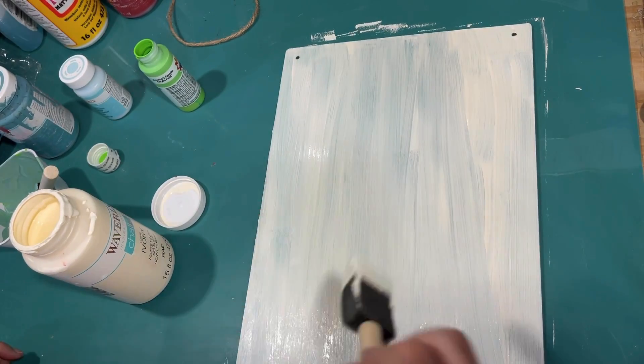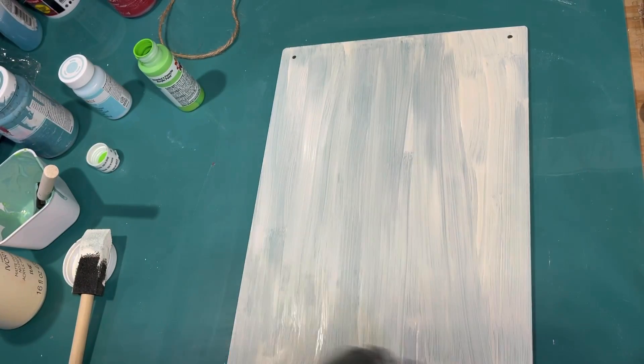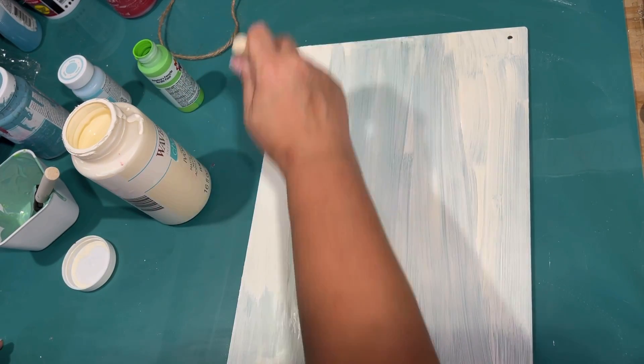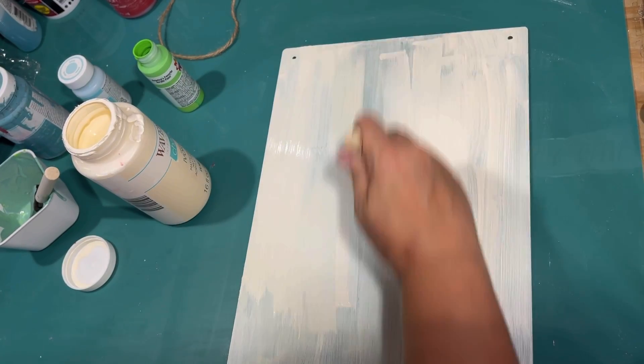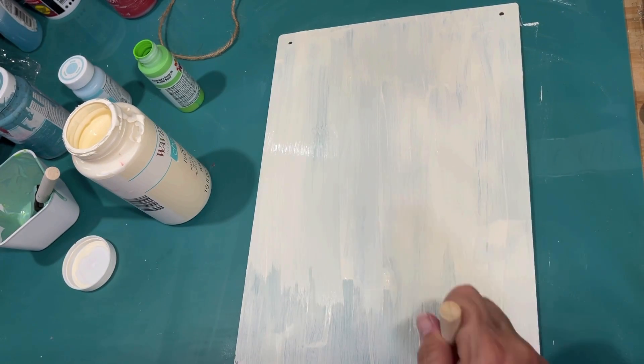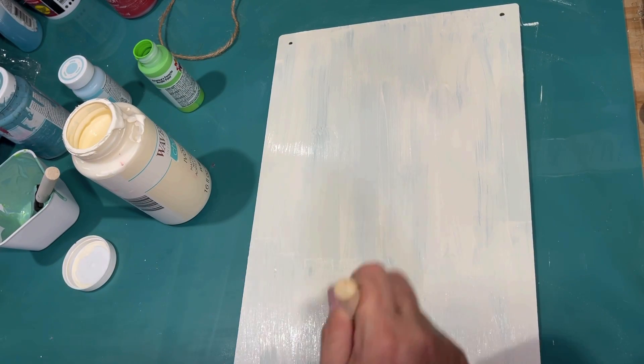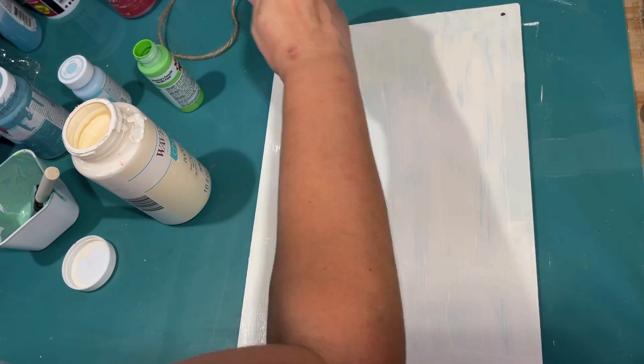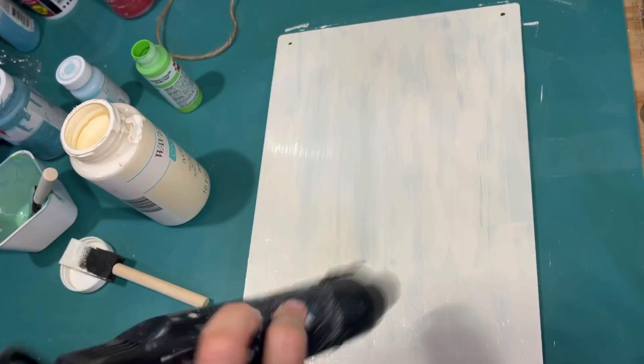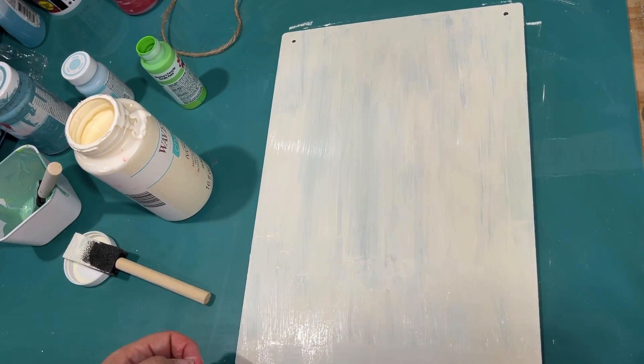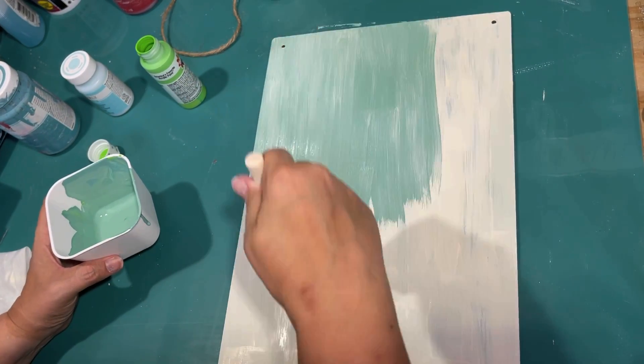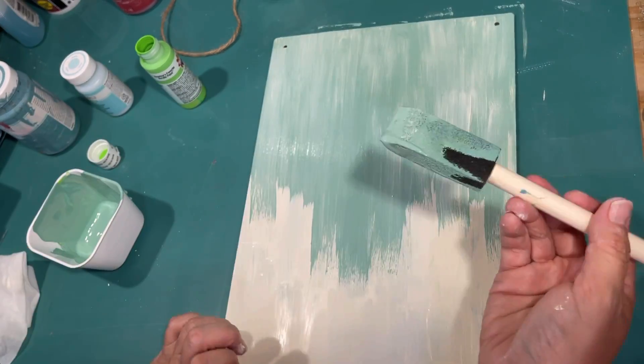So here I am going in with the ivory chalk paint by Waverly. And it is going to require a couple coats to cover all of that writing on these chalkboards. They have these chalkboards at all of my Dollar Trees and they are really strong, flat, thick signs. And so they're great for making signs with. So a couple coats of that ivory chalk paint covered up all that white writing.